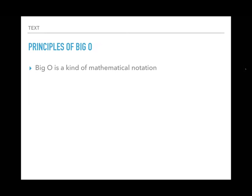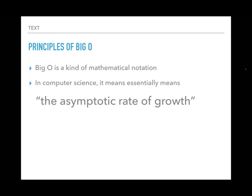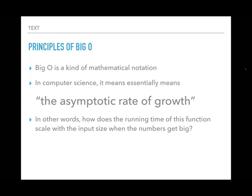Big O is a kind of mathematical notation used in both mathematics and computer science, though computer scientists use it a bit more loosely. Technically in mathematics Big O connotes something different than in computer science, but computer scientists generally use Big O to mean the asymptotic rate of growth — and generally a tight bound on that growth. So if I say O(n), that means the algorithm scales proportional to the input size n. The amount of time it takes scales proportional to n, or n², or log n.